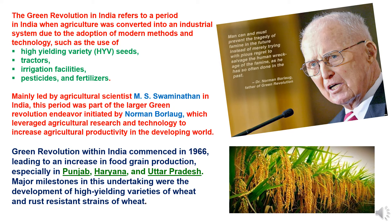The Green Revolution in India refers to a period when agriculture was converted into an industrial system due to the adoption of modern methods and technology, such as the use of high yielding varieties of seeds, tractors, irrigation facilities, pesticides, and fertilizers. Mainly led by Dr. M.S. Swaminathan in India, this period was part of the larger Green Revolution endeavor initiated by Norman Borlaug, which leveraged agriculture research and technology to increase agricultural productivity in the developing world. Dr. Norman Borlaug is known as the father of the Green Revolution worldwide.